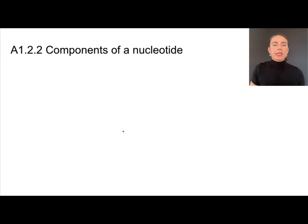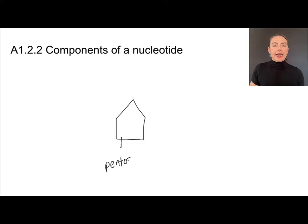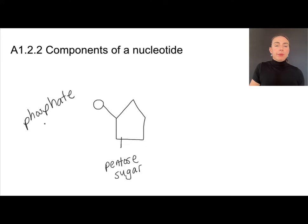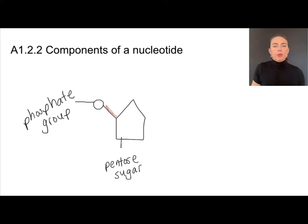Let's zoom in on one of the repeating units of DNA — this is called a nucleotide. Nucleotides, whether in RNA or DNA, have the same components. They have some kind of pentose sugar, which is a five-sided sugar. Attached to that sugar, they have a phosphate group, and the phosphate group must be attached to a specific point on the pentose sugar.